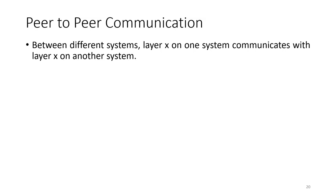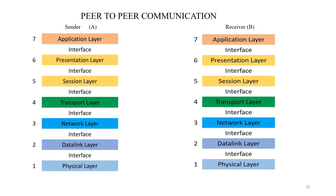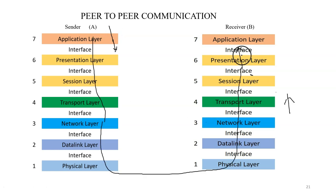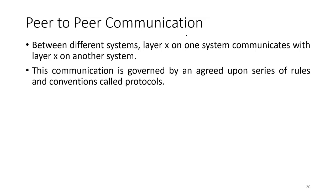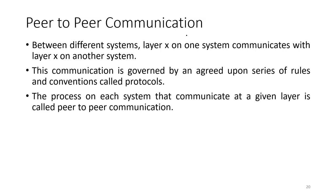Layer X on one system communicates with the same layer — layer X — on another system, and that is known as peer-to-peer communication. Here you can see that there is one system, system A, which is the sender, and another system, system B, which is the receiver. There is a flow of data, and it seems that there is direct communication between these two different systems — that is known as peer-to-peer communication. This peer-to-peer communication is governed by an agreed-upon series of rules and conventions.